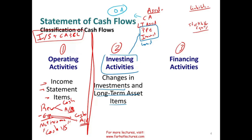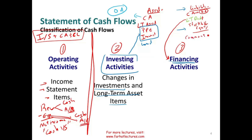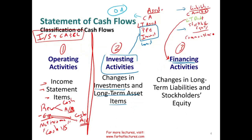The third section is financing activities — how we finance ourselves. We finance ourselves either through debt or through equity. The financing activities specifically looks at long-term debt — remember, current liabilities are already part of operating activities — and it looks at stockholders' equity accounts, which could be preferred stock, common stock, treasury stock, paid-in capital, and so on. We also issue or repurchase common stock, and we pay dividends, which is also part of financing activities.